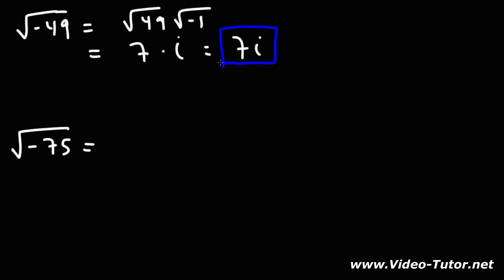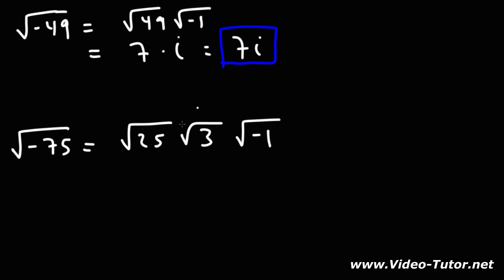Now what about the square root of negative 75? 75 is not a perfect square like 4, 9, 16, 25, or 49. However, 3 times 25 is 75, and 25 is a perfect square. So we break down 75 into 25 and 3, since 25 is the highest perfect square that goes into 75. The square root of 25 is 5, and the square root of negative 1 is i, so the answer is 5√3 times i.